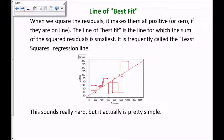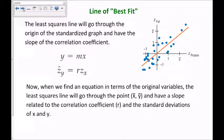This sounds really complicated, but it actually turns out to be pretty simple because there's some mathematics that simplifies things for us. The least squares regression line will go through the origin of the standardized graph and have the slope of the correlation coefficient. Because it goes through the origin of the standardized graph, with the original variables we know that our least squares regression line will go through the point (x̄, ȳ) — the mean of the x's and the mean of the y's. That locks us into one exact point the graph must go through. And the slope is related to the correlation coefficient, along with the standard deviations of x and y.